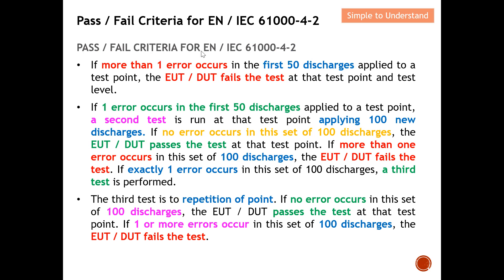If exactly one error occurs in the second set of 100 discharges, you must do a third test. In the third test, if there is no error in the first 100 discharges, you pass. However, if there is one or more errors in this 100 discharges, your EUT fails the test. This is the complete pass/fail criteria for EN/IEC 61000-4-2.